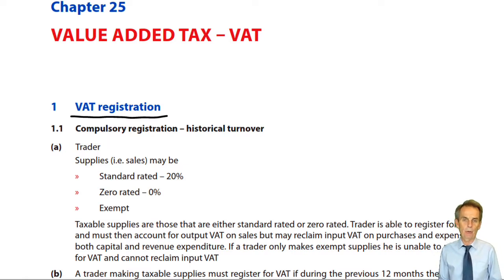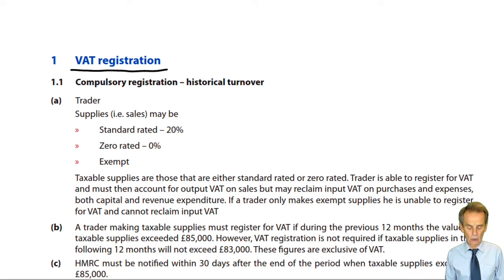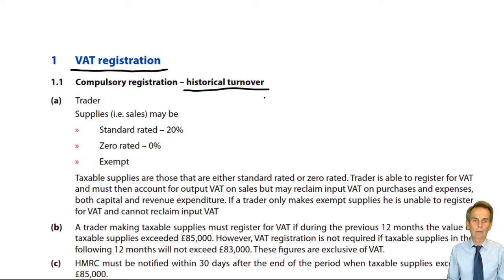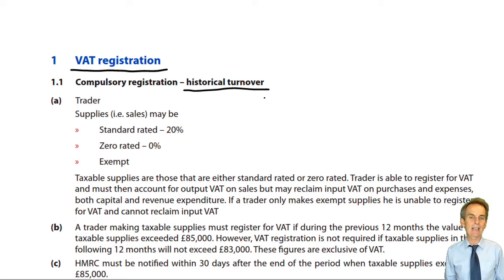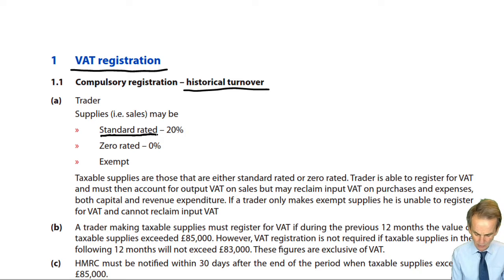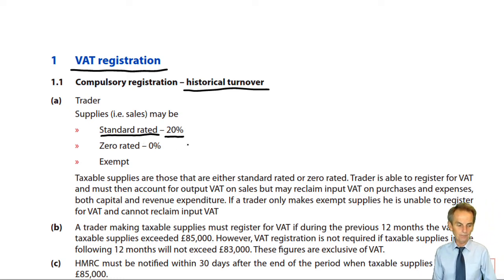We're focused to begin with on compulsory registration. There are two tests in relation to that. The first, quite logically, is based on historical turnover — the amount of sales made in any given period. If a trader is required to account for VAT, they'll have to deal with the type of supply that they make. What is the nature of the trader's supplies? Well, the vast majority of supplies made by the vast majority of businesses are going to be said to be standard rated, and in the UK the standard rate of VAT is 20%.